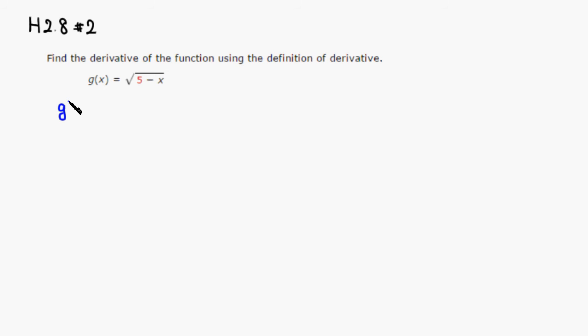g prime of x, by definition, is a limit as h approaches 0. And square root of 5 minus x plus h minus g of x is square root of 5 minus x all over h.